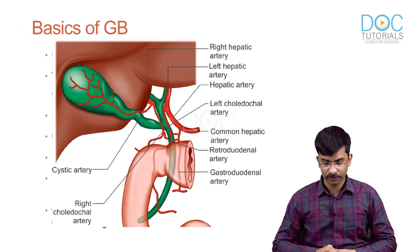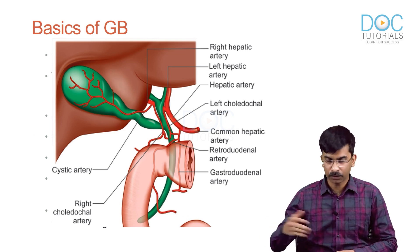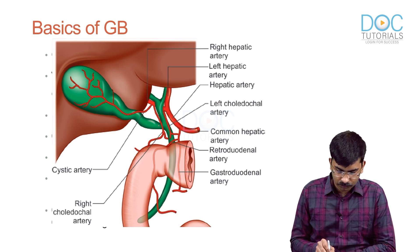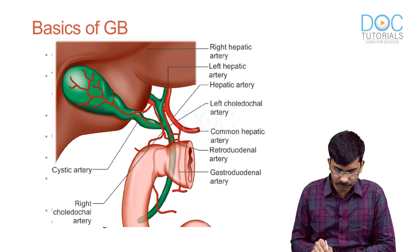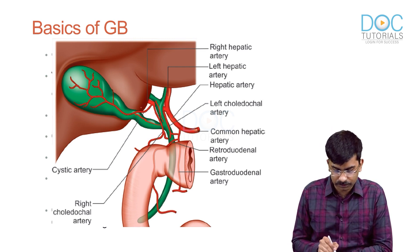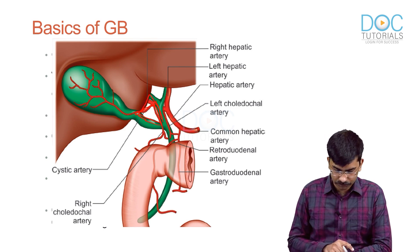Moving on to the triangles of the gallbladder. Calot's triangle was a misnomer initially but has now been reclassified properly. There are two triangles between the gallbladder and the common hepatic duct. The inferior border is formed by the cystic duct and the inferior border of the gallbladder. The left border is formed by the common hepatic duct. Depending upon the superior border, it is either the hepatocystic triangle or Calot's triangle. If the superior border is the cystic artery, it is Calot's triangle. If the superior border is formed by the inferior surface of the liver, it is the hepatocystic triangle.